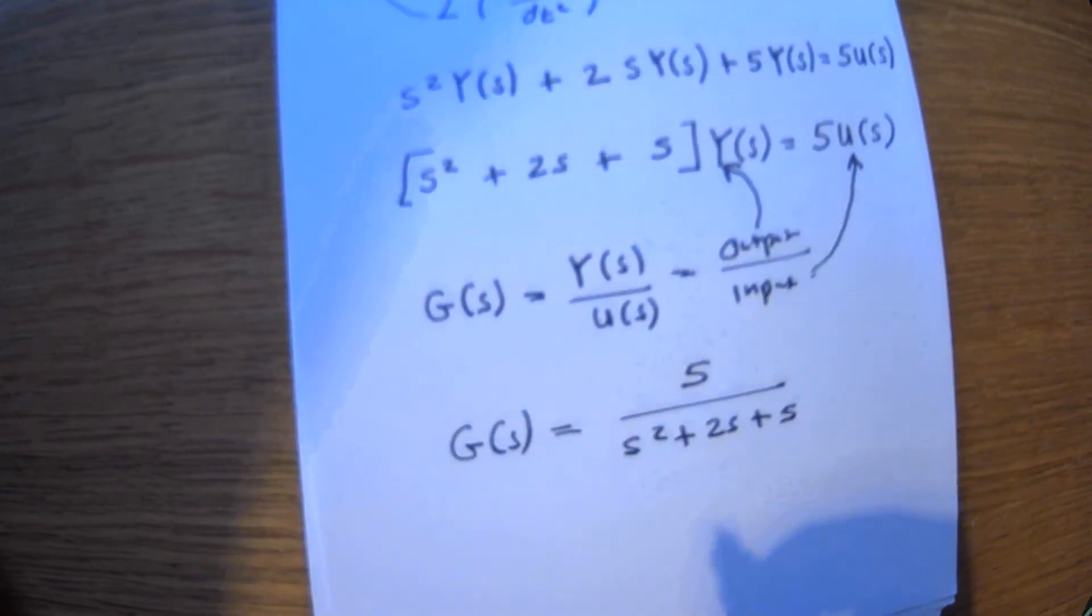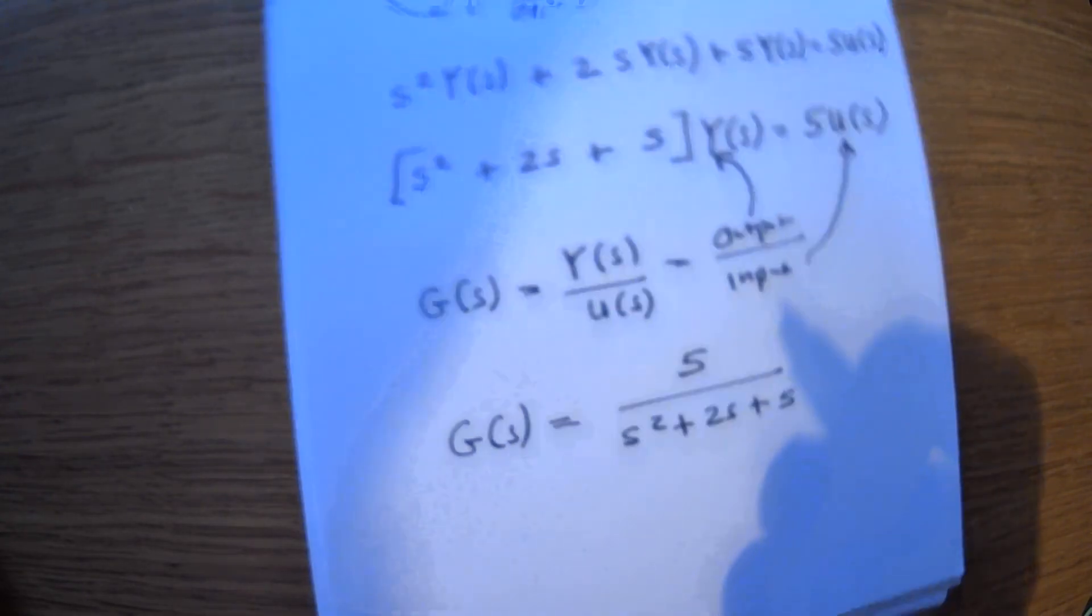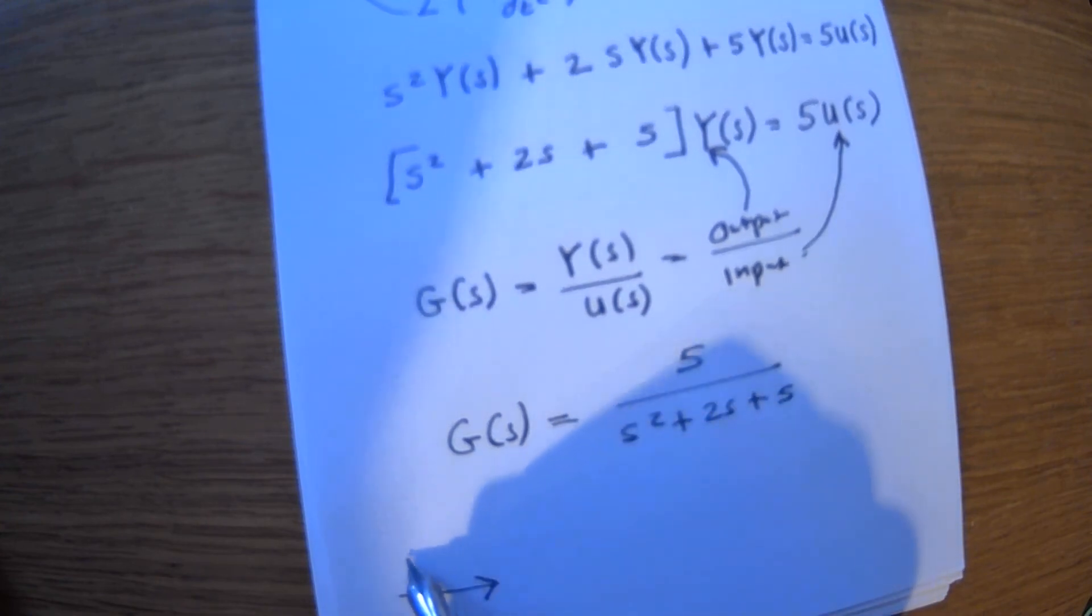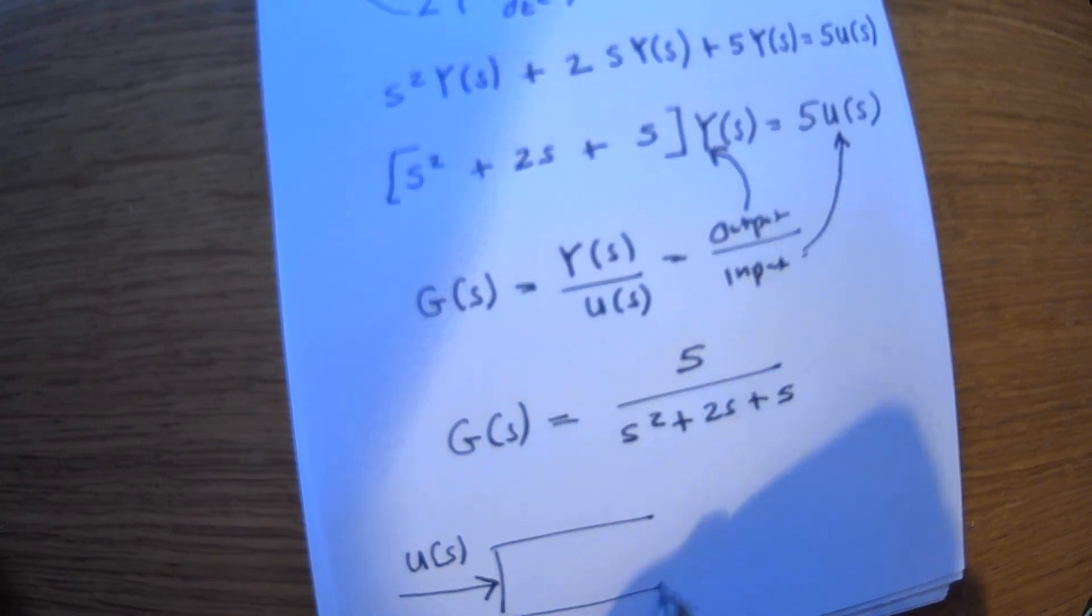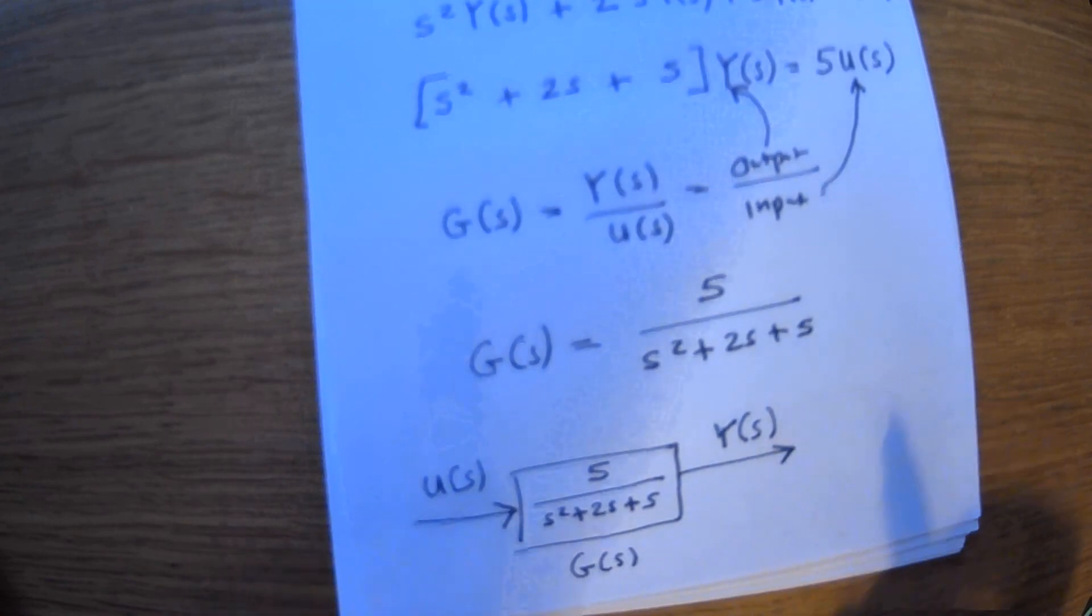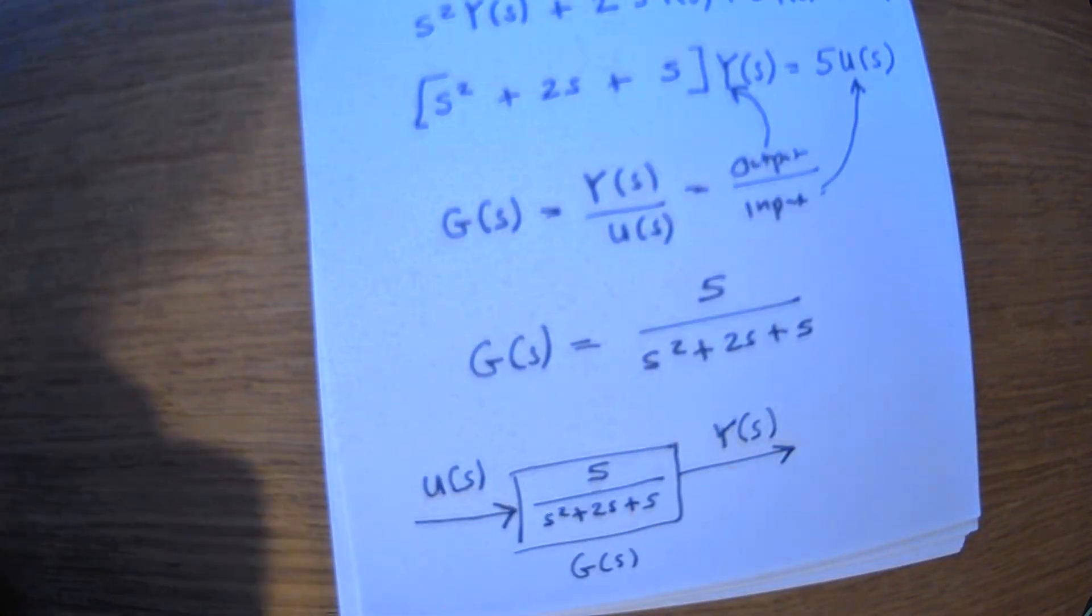Then if we're putting that in the form of the block diagram form that the question has to do - remember that the input was U of s, the transfer function was G of s, which in this case is five over s squared plus two s plus five, and then the output is Y of s. Okay, get familiar with this notation because this is what I'll use all the time.